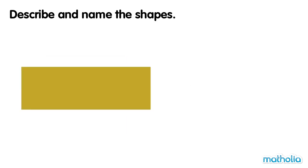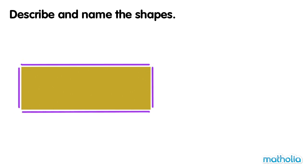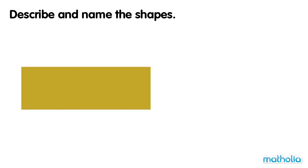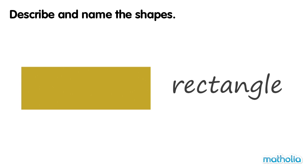This shape has four corners and four sides. The sides are not the same. This shape is called a rectangle.